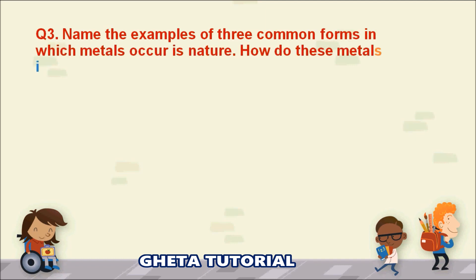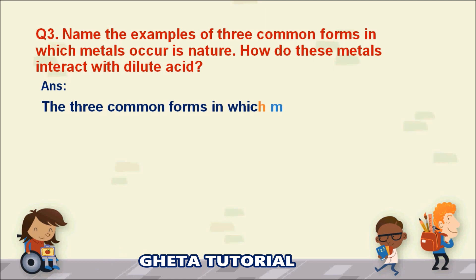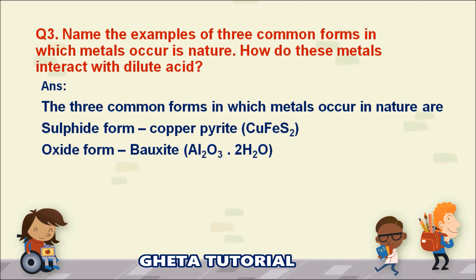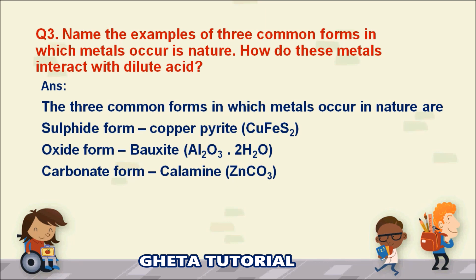The third question: name three common forms in which metals occur in nature. First is the sulfide form — example: copper pyrite (CuFeS₂). Second is the oxide form — example: bauxite, aluminium oxide (Al₂O₃·2H₂O). Third is the carbonate form — example: calamine, zinc carbonate (ZnCO₃).